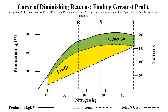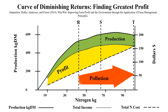Environmentally, after point R, pasture response to each kg of nitrogen declines, and this unused nitrogen contributes to increasing nitrogen loss problems like greenhouse gas emissions and leaching. It's your money that's funding this pollution. Few professionals and farmers grasp these relationships — therefore it's ignored, like a wall and carpet.